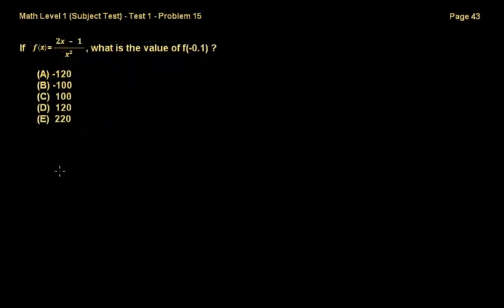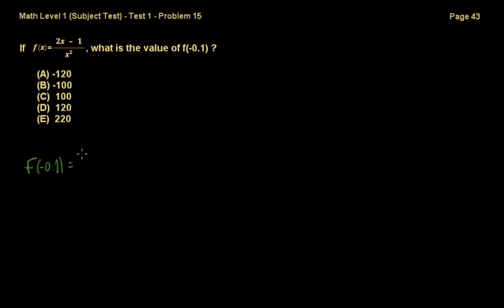Problem 15: if f(x) is equal to 2x minus 1 over x squared, what is the value of f(−0.1)? In order to find that, all you need to do is substitute x with −0.1. So f(−0.1) is equal to 2 multiplied by −0.1 minus 1, over −0.1 squared.